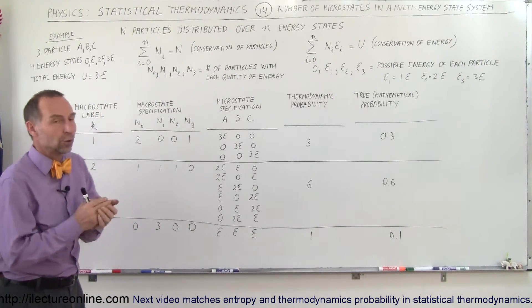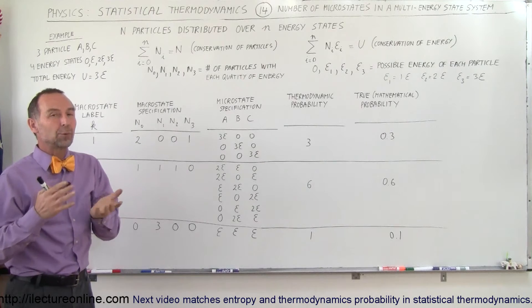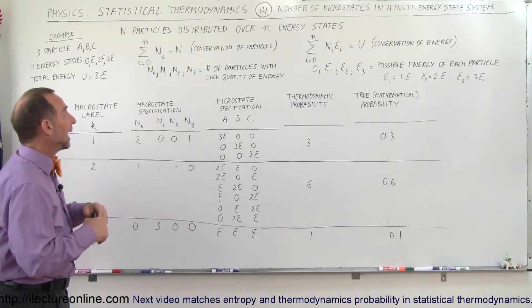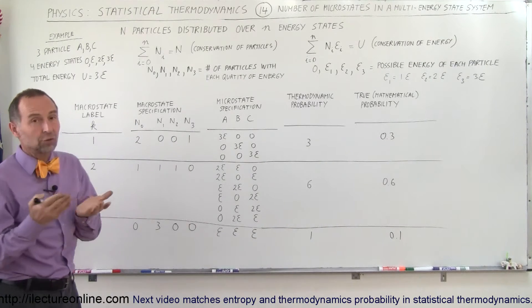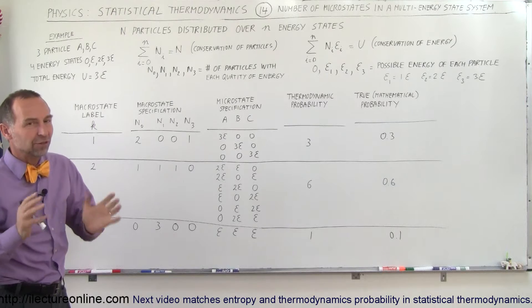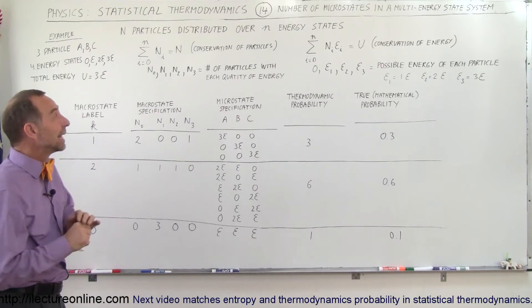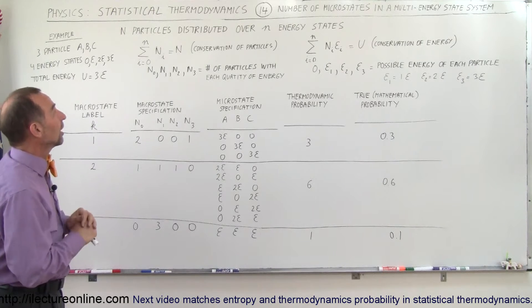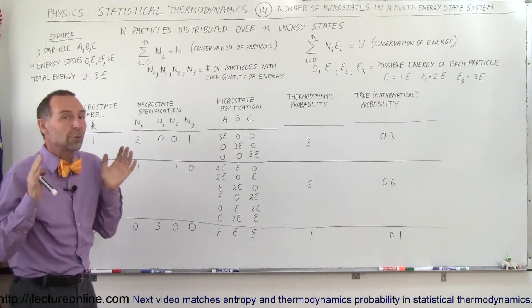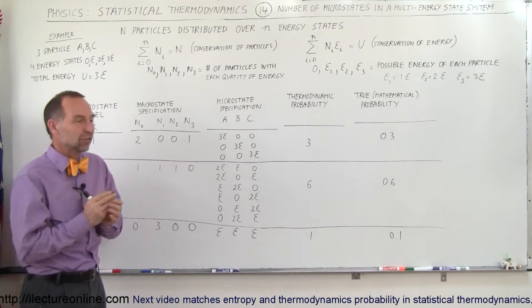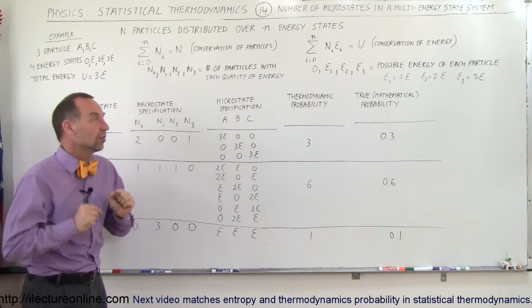In this example, we have four energy states and three particles — but it doesn't matter, we can do it for any number of particles and any number of energy states. There are, however, some conditions that need to be met — some constraints.